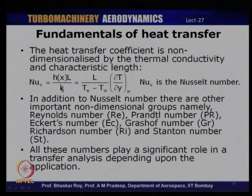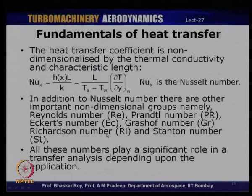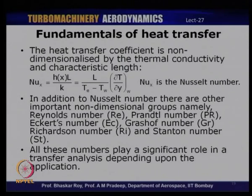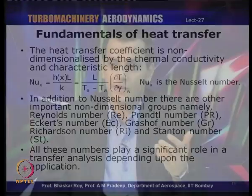The Nusselt number is one of the non-dimensional parameters extensively used in heat transfer. There are numerous other non-dimensional groups: Reynolds number, Prandtl number, Eckert number, Grashof number, Richardson number, and Stanton number. These play a very significant role in heat transfer analysis in turbine blades, and depending upon the nature of heat transfer, one or more of these groups will play a significant role in the heat transfer characteristics.